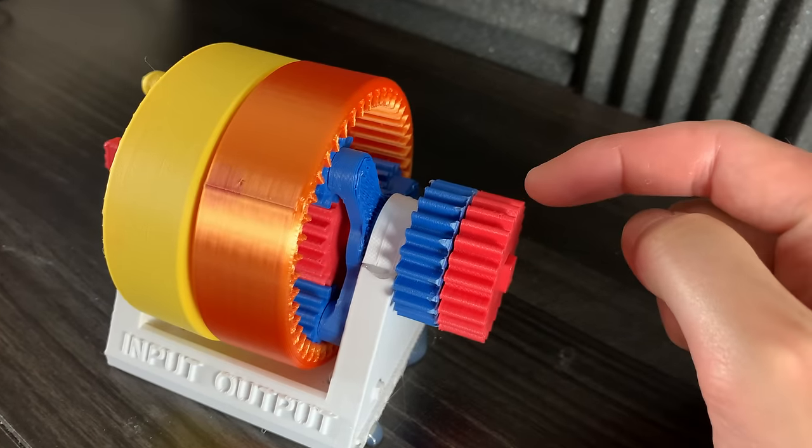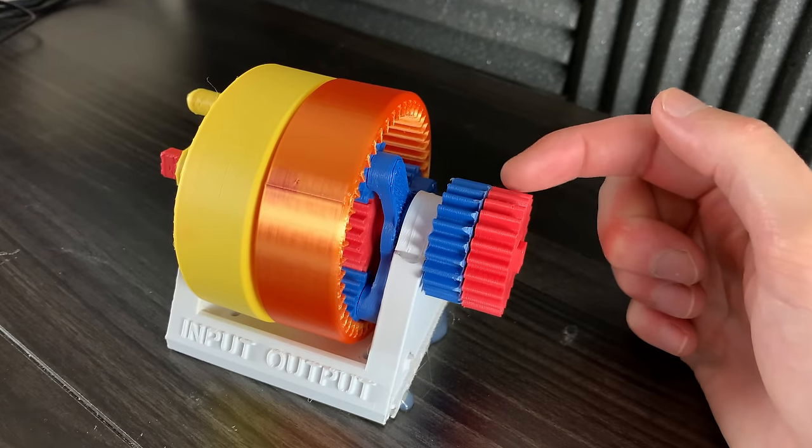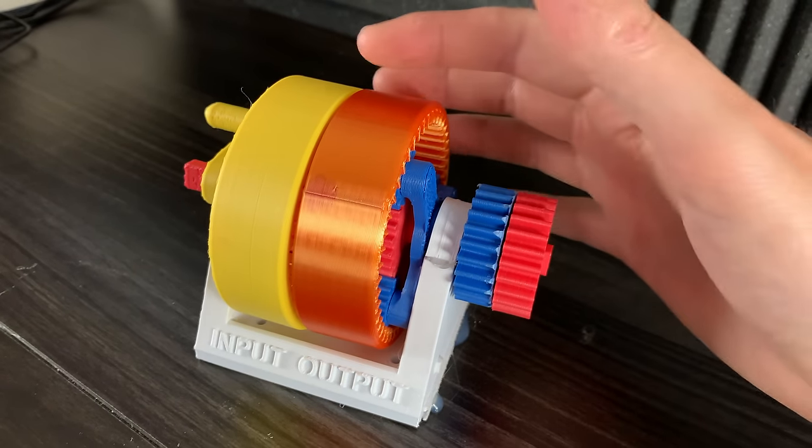If I hold this red gear, it'll keep the sun gear in place. By changing which gear I hold in place, it'll change the gear ratio of the gearbox.